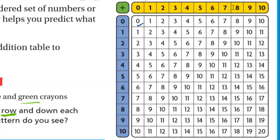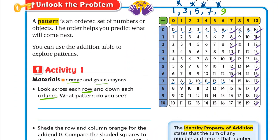For example, the row: zero, one, two, three, four, five, six, seven, eight, nine, ten. Another row: seven, eight, nine, ten, eleven, twelve, thirteen. The numbers increase by one. The same is true for columns — for example: ten, eleven, twelve, thirteen, fourteen... all rows and columns increase by one.